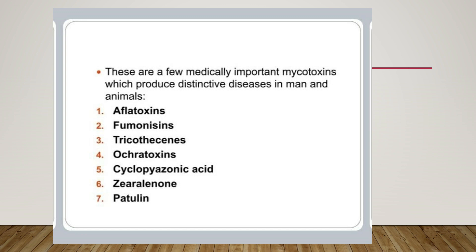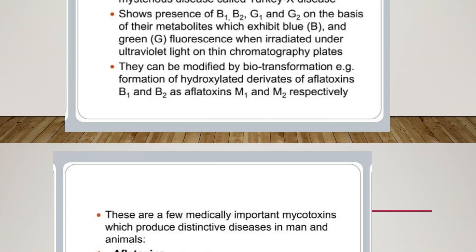These are a few medically important mycotoxins which produce distinctive diseases in man and animals. First is aflatoxins, second is fumonisins, third is trichothecins, fourth is ochratoxins, fifth is cyclopiazonic acid, and then zearalenone and patulin — seven types in total.